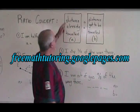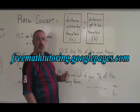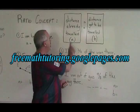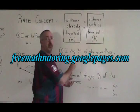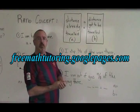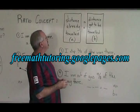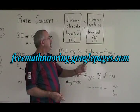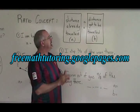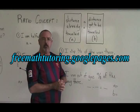This is illustrated here. In the ratio formula we have a value A and a value B, and this is what they represent: A represents the distance already traveled, and B represents the distance yet to be traveled.